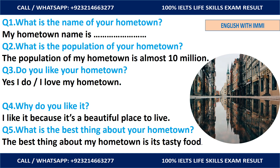Question number four: Why do you like it? Answer: I like it because it's a beautiful place to live. Question number five: What is the best thing about your hometown? Answer: The best thing about my hometown is its tasty food. You can put anything you want here — maybe it is famous for its natural beauty or anything else. Since Lahore is famous for tasty food, I put that.